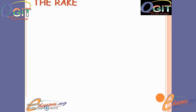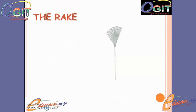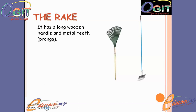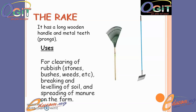Next is the rake. The rake has a very long wooden handle and metal teeth, otherwise called prongs. The rake is used for clearing of rubbish such as stones, bushes, and weeds on the farm, as well as breaking and leveling of soil and spreading of manure on the farm.